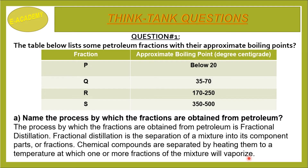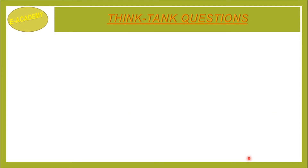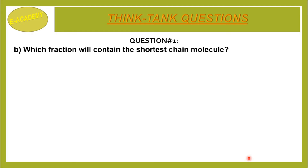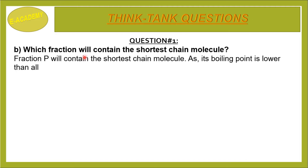If a fraction reaches its boiling point, it will vaporize and the remaining fractions remain. In this way we can differentiate and extract each fraction from the others. Question No. 1b: Which fraction will contain the shortest chain molecule? Fraction P will contain the shortest chain molecule as its boiling point is lower than all other fractions, so it will vaporize quickly.